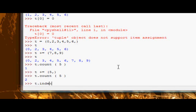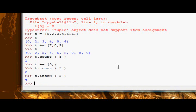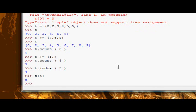And t.index(5). The first occurrence is at position four. There we go. Those are the only two methods we have with tuples.